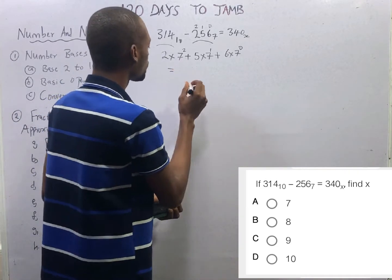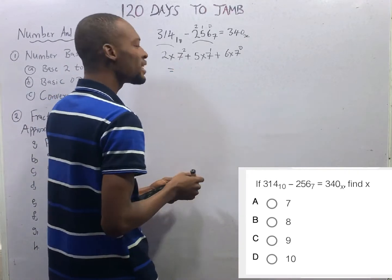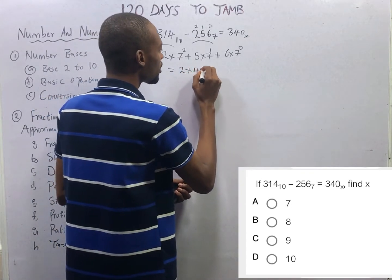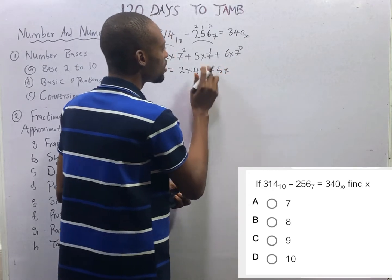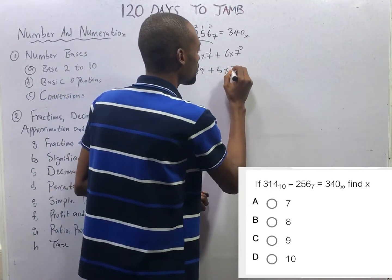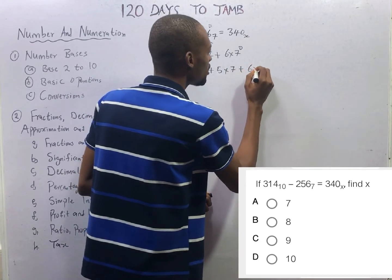This will simply give you 7 squared is 49. So 2 times 49 plus 5 times 7 raised to the power of 1, 5 times 7, plus 6 times 1.